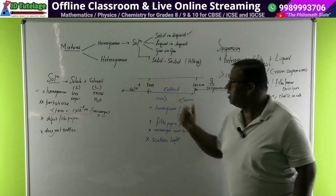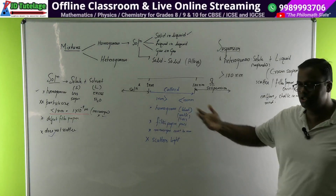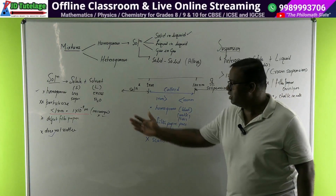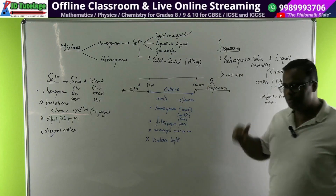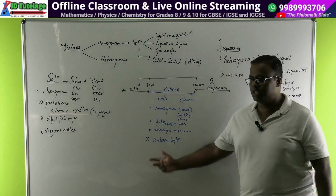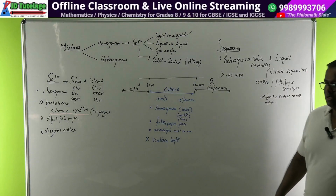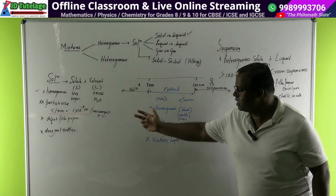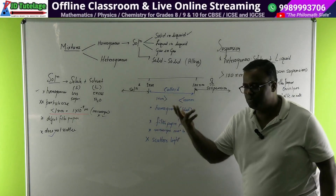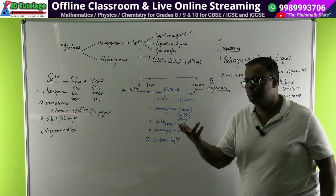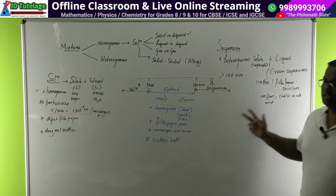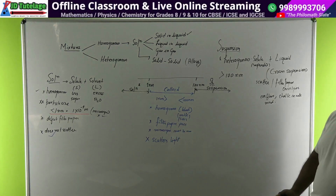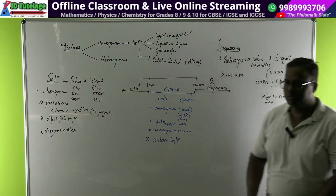Now suppose both are homogeneous - bilkul homogeneous sir, filter paper pass kar raha hai. It passes. Then particle size - you cannot measure particle size every time, you can't do that. So just take the two things and pass light through them. One of the best examples: when your mom gives you a glass of milk this evening, whether you want to drink it or not.